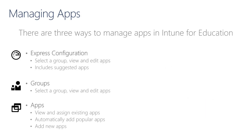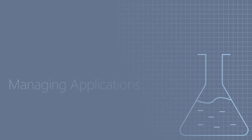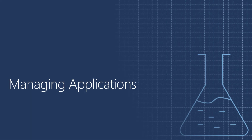Intune for Education offers three ways to manage applications. The first is Express Configuration — a wizard where you select the security group first, then choose the settings and applications to deploy to that group. Another way is the Groups view, similar to what we covered in Module 4 for managing settings: select the security group and view or edit all applications assigned to it. The last option is the Apps view, where you can view and modify assignments of existing applications or define new ones.